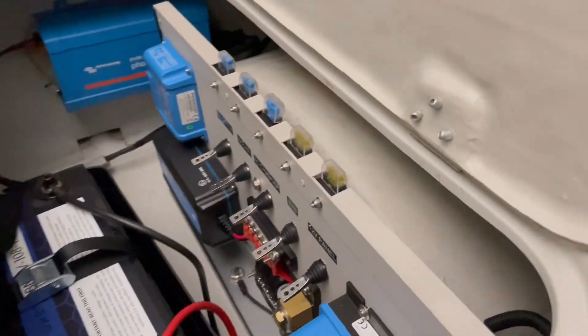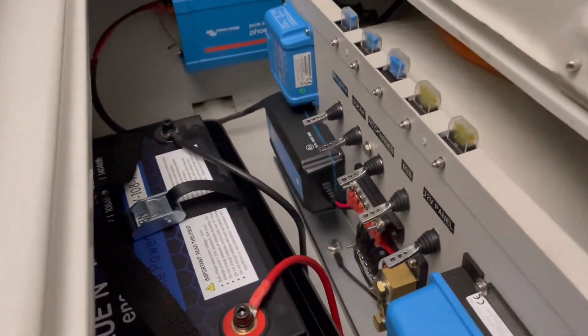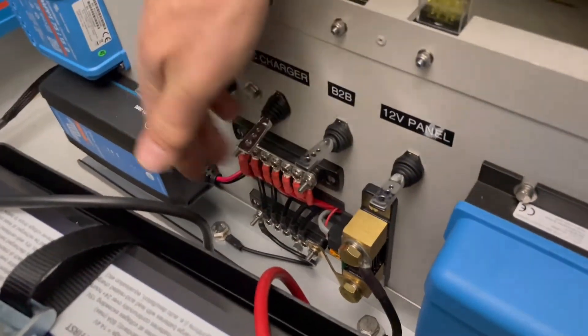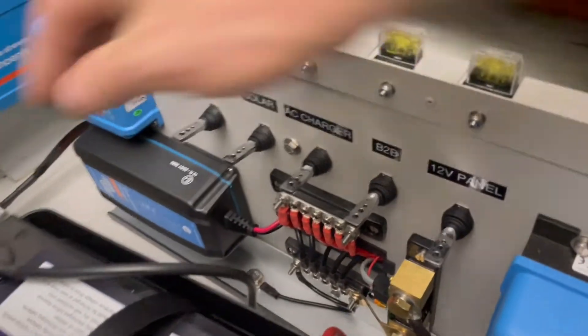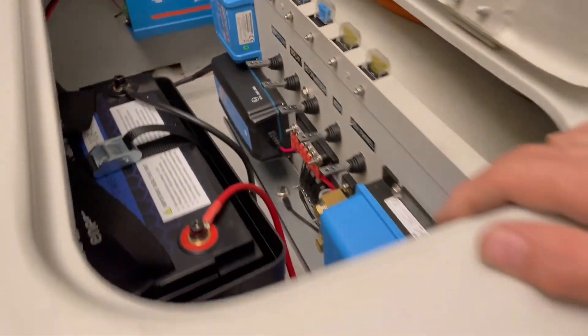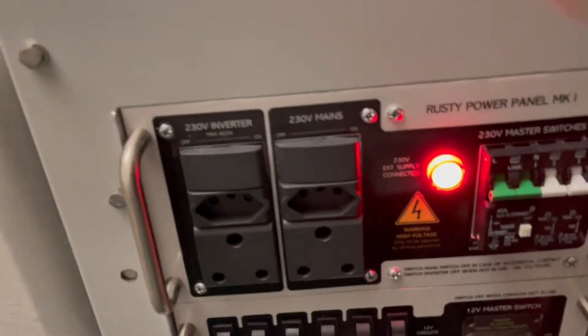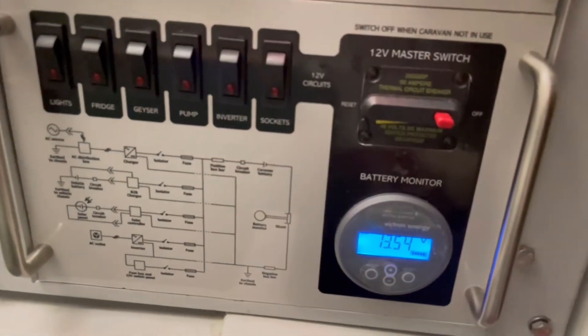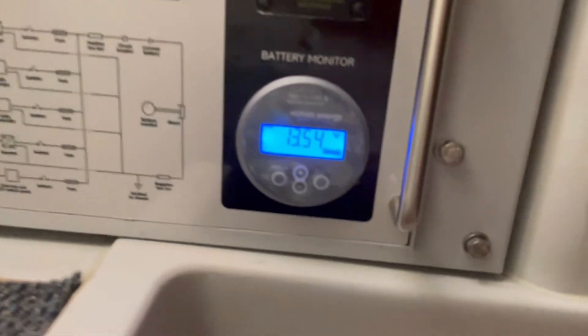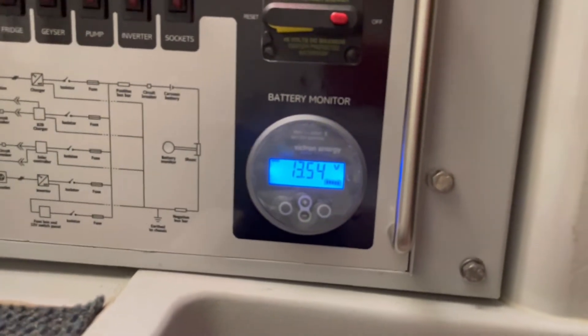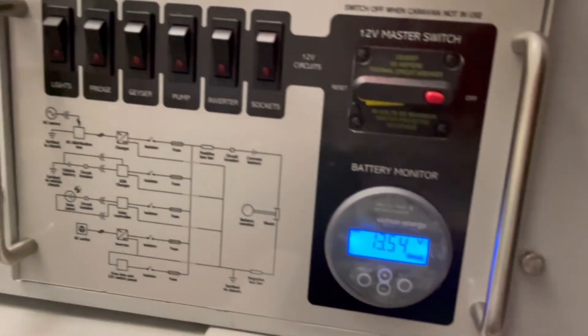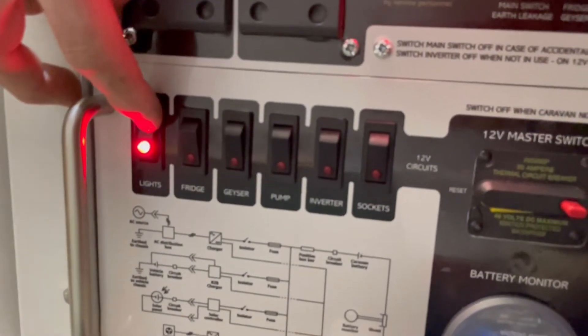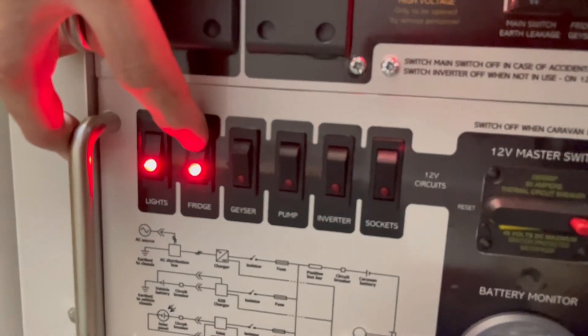Let's have a look. First switch on all the circuits, and once we switch on the master, this is the 12 volt master, there we go, getting a reading on the Victron battery monitor. We should be able to get lights, fridge,